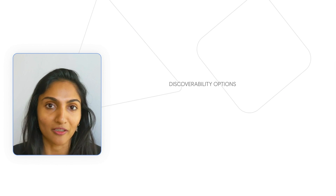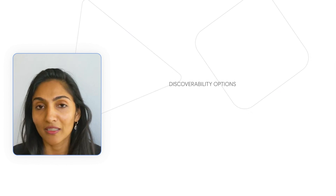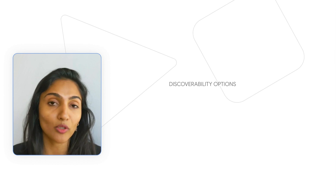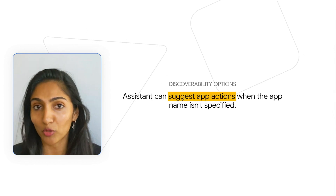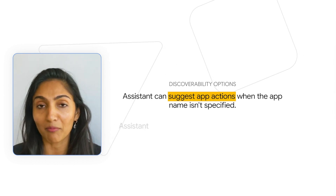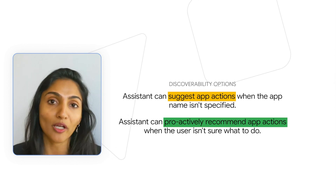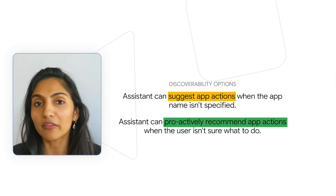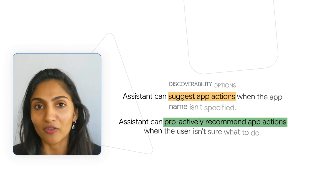Let's talk about some general discovery options that are available. The Assistant can suggest App Actions even when the app name is not specified. You can also proactively recommend an App Action when a user isn't quite sure what to do. All of this is based on a user's habits and past behavior.